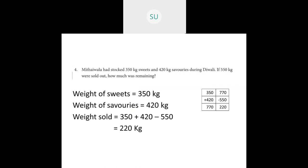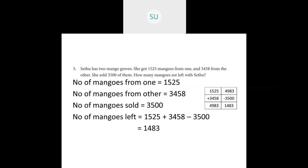Problem 4: a mitai wala stocked 350 kg of sweets and 420 kg of savouries during Diwali. If 550 kg was sold, how much remained? First add: 350 plus 420 equals 770 kg total. Then subtract what was sold: 770 minus 550 equals 220 kg. The remaining stock is 220 kg.